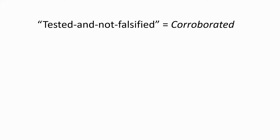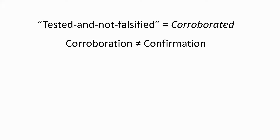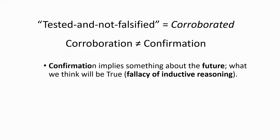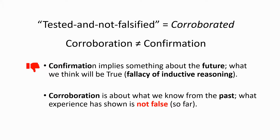Now I'd like to spend a few minutes on this concept of tested and not falsified. Admittedly, it's a very awkward formulation, and Popper knew that, so he suggested we use the word 'corroborated' in its place. It's important to realize that corroboration is not the same as confirmation. Confirmation implies something about the future — what we think will be true going forward — and this is the fallacy of inductive reasoning. The fact is that we do not know for sure what will happen in the future, and it is unrealistic to think or imply that we do. Corroboration, on the other hand, is about what we know from the past — what experience has shown is not false so far. It does not presume or promise anything about the future; it simply affirms what we found to be true up till now.